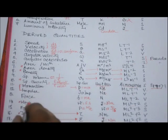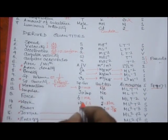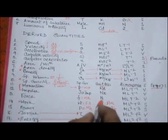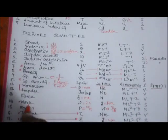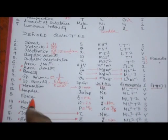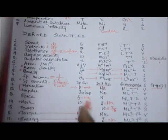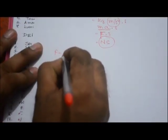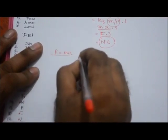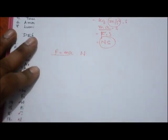Force: F = ma, unit is newton, dimension is MLT⁻², and it is a vector quantity.